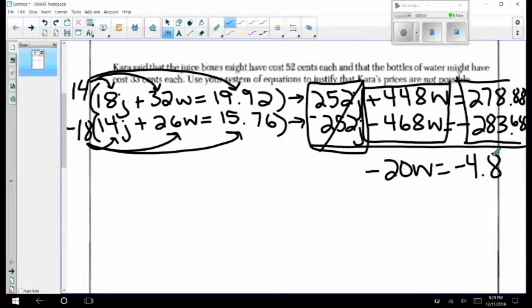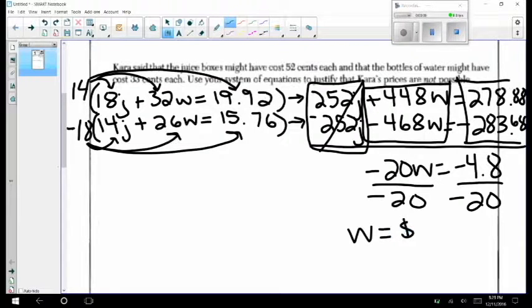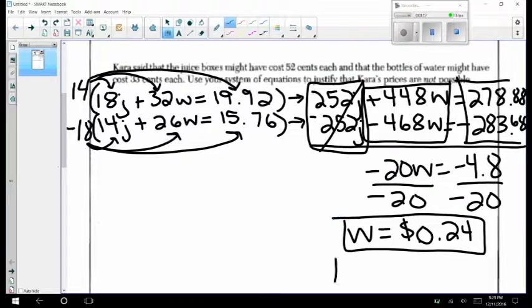To finish the problem we want to divide by a negative 20 and we will see that the price of a water bottle will be 24 cents not 33 cents as Kara had suggested.